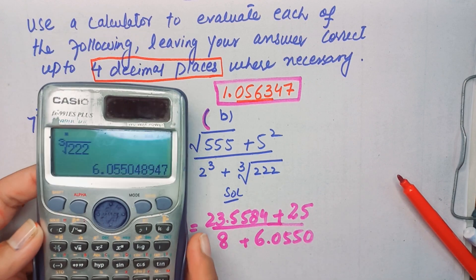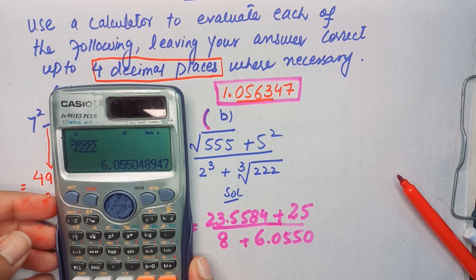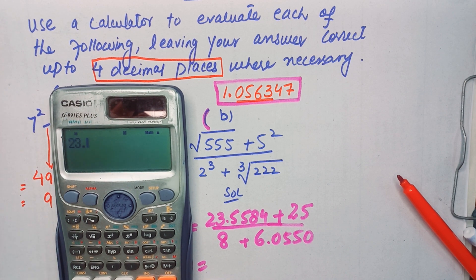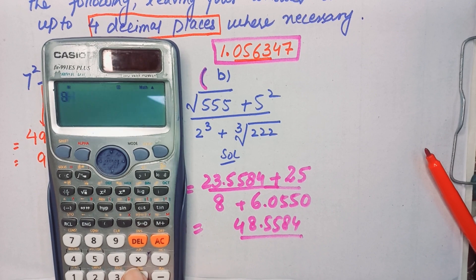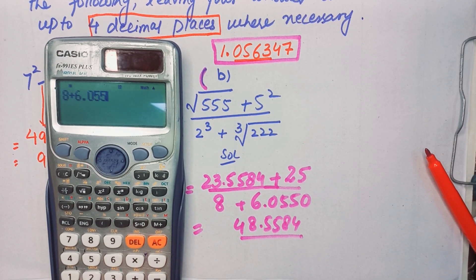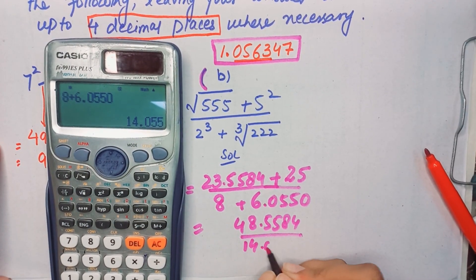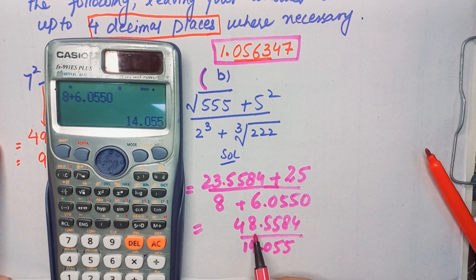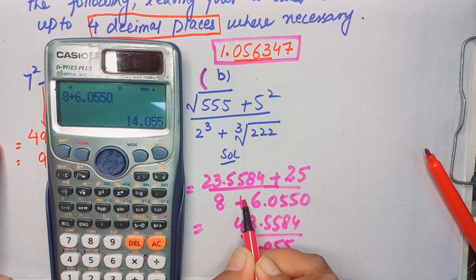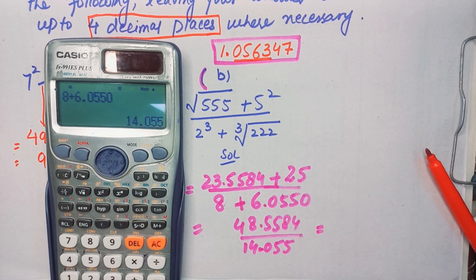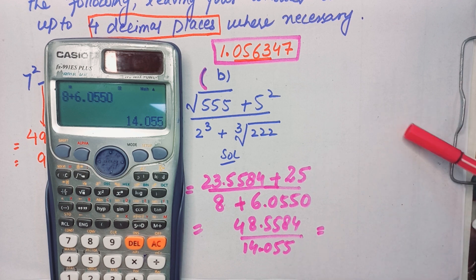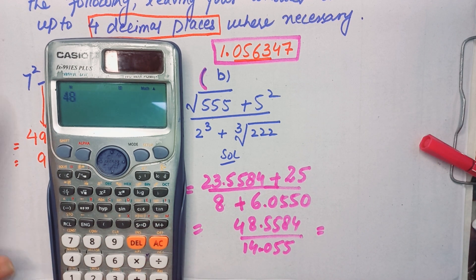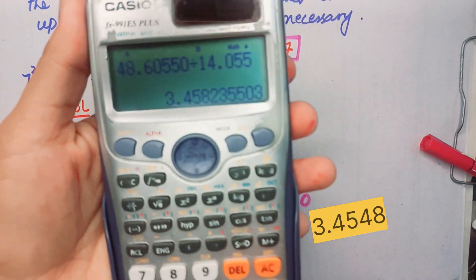Now we will just add these two, and then add these two, and then we will divide to get the final answer. By adding the numerator, I am getting 48.5894. By adding the denominator, I am getting 39.0550. So the final answer will be, after dividing, we have to divide 48.5894 by 39.0550, giving us 1.2440 correct to 4 decimal places.